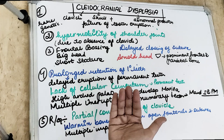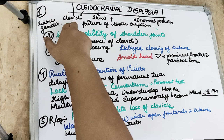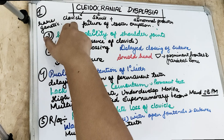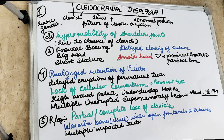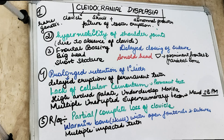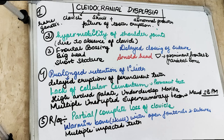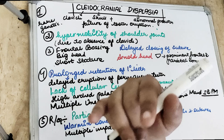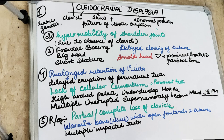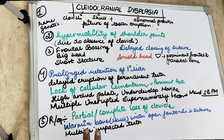In cleidocranial dysplasia, there may be complete absence or hypoplasia of one or more clavicles. Because the clavicle — the collar bone — is absent, these people can approximate their shoulders forward until they meet in the midline. There is hypermobility of the shoulder joint, and they can move their opposing shoulders medially close to the midline. This is due to partial or complete absence of the clavicle and weakness of the muscles attached to it.